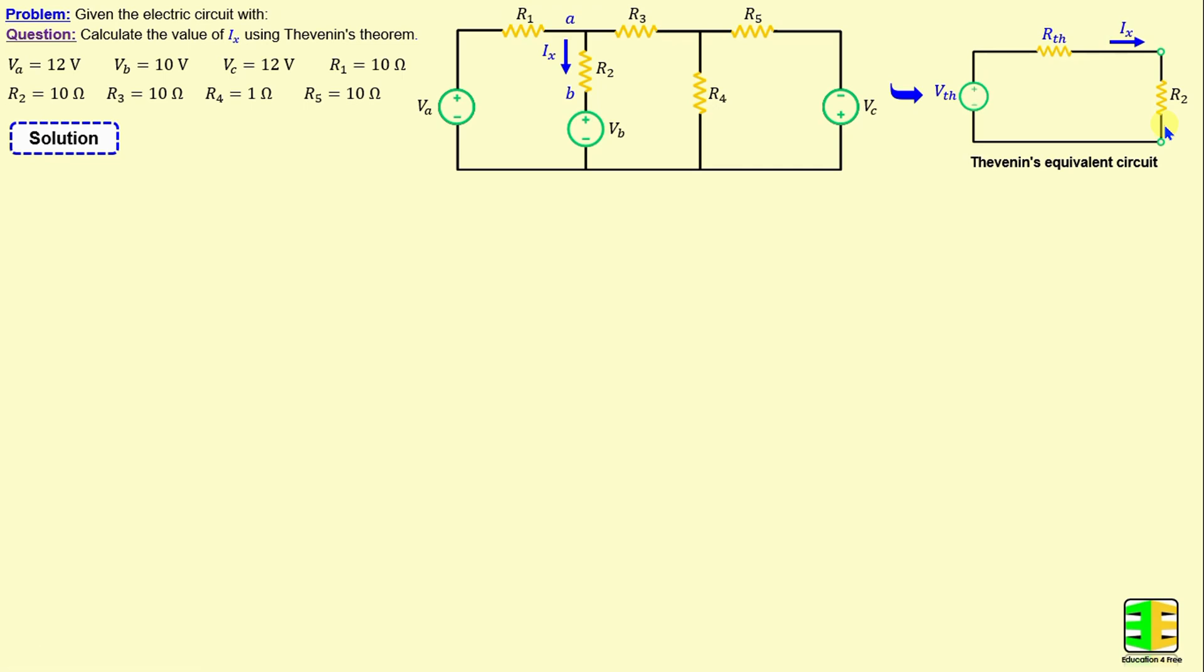I will start first with the determination of Thevenin's resistance. This step can be done by disconnecting R2 and removing all independent voltage sources in the circuit. That means the voltage sources will be replaced by a short circuit. The Thevenin's resistance represents the equivalent resistance between terminals A and B.